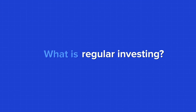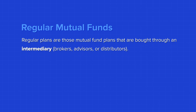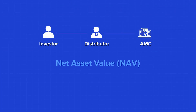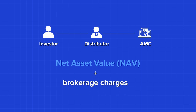What is regular investing? Regular investing means when you approach a bank or a mutual fund distributor whose services you want to employ to buy mutual funds, it's called a regular option. It is called a regular option because the NAV — the fund price, the cost of buying — includes a small percentage of brokerage that is due to the intermediary called the distributor.